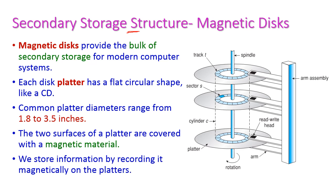Under secondary storage structure we are going to see the structure of the magnetic disk. The magnetic disk provides the bulk of secondary storage for modern computer systems. Each disk platter has a circular shape like a CD, with a size of 1.8 to 3.5 inches. Both the top and bottom surfaces of the platters are covered with a magnetic material, which stores information by recording it magnetically on the platters.